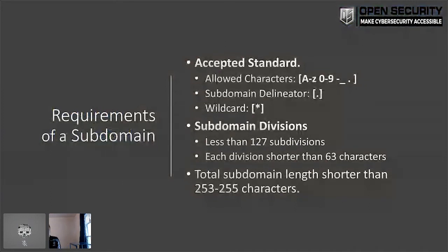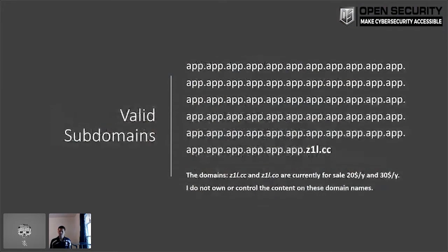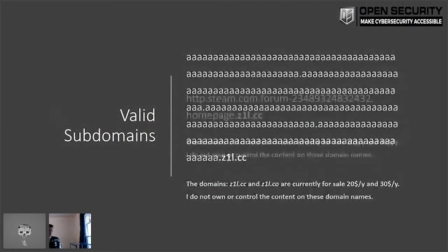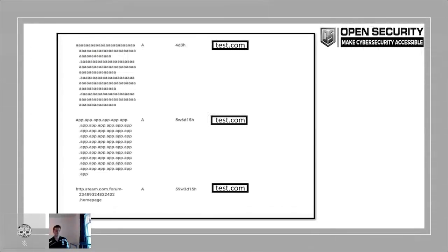We can also do subdomain impersonation. Subdomains by default have a few character sets: A through Z, zero through nine, hyphens, underscores, and periods as delineators. You also have up to 253 characters on most DNS providers to type whatever you'd like. So this is a valid subdomain — and so is this. How can we start to use this? Here's an example: HTTP.steam.com — and to prove it, all of these are completely valid subdomains. I did blur my actual domain name there, of course.